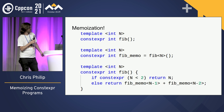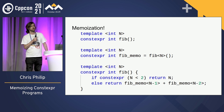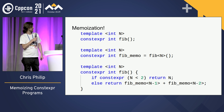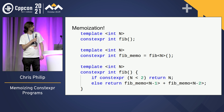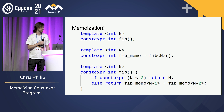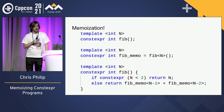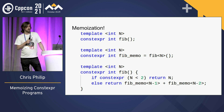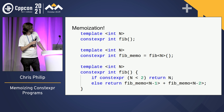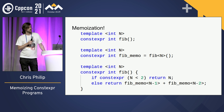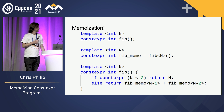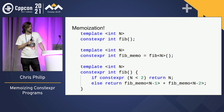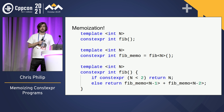Good news though — we can memoize our constexpr functions. The way we do that is by making a constexpr global variable template. All this is going to do is dispatch to our function, and then our function recurses by invoking our variable template instead of directly recursing through the function itself.